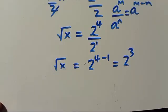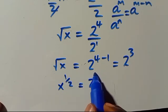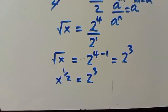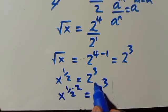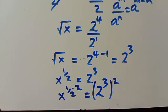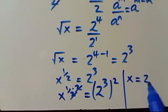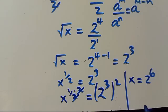From √x = 2³, we write x^(1/2) = 2³. To eliminate the 1/2 power, we raise both sides to the power of 2: x^(1/2 · 2) = 2^(3·2), giving x = 2⁶ = 64. This confirms the same value as method one.